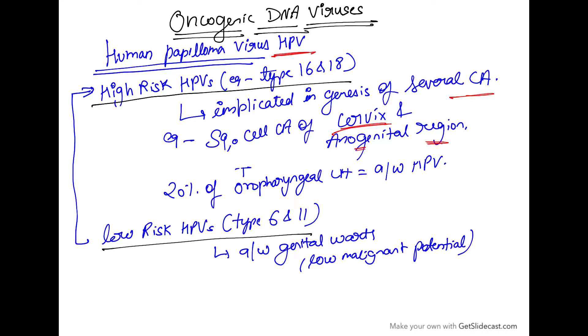Hello everyone, today we are going to discuss oncogenic DNA viruses, specifically human papilloma virus HPV. There are two types of HPV: high risk HPV and low risk HPV. High risk HPV are type number 16 and type number 18.